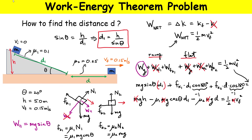The only unknown remaining is d. We group terms: bring the d term to one side and the velocity term to the other side. Then divide through by g to simplify. We bring the μ2·d term to the right-hand side and move the v_final squared term to the left, arriving at one final expression.